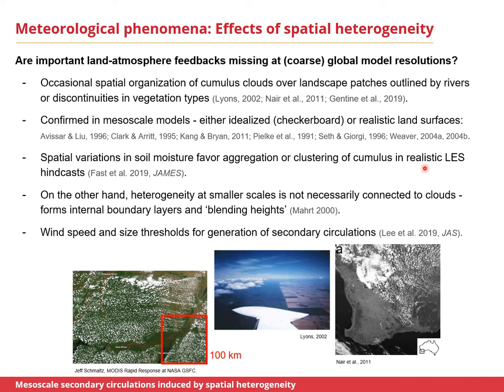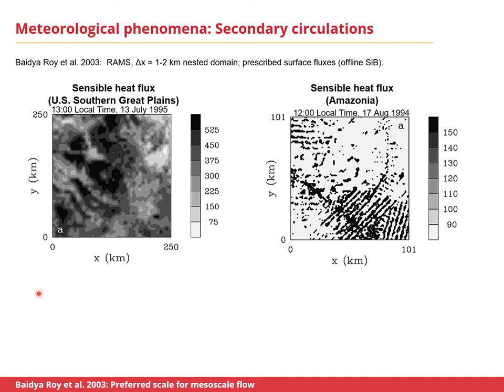We also see evidence that spatial variations in soil moisture can favor aggregation or clustering of cumulus in realistic large eddy simulation hindcasts. On the other hand, there are limitations to these effects — spatial variations have to be of a certain size to modify the updrafts of cumulus clouds. If they're too small, internal boundary layers form and effects are blended below the cloud base height, meaning there are wind speed and size thresholds for generation of these circulations. But a bigger reason these effects haven't made their way into parameterizations is that they only look at one aspect of what are more broadly known as secondary circulations, defined by AMS as organized flow superimposed on a larger-scale mean circulation.